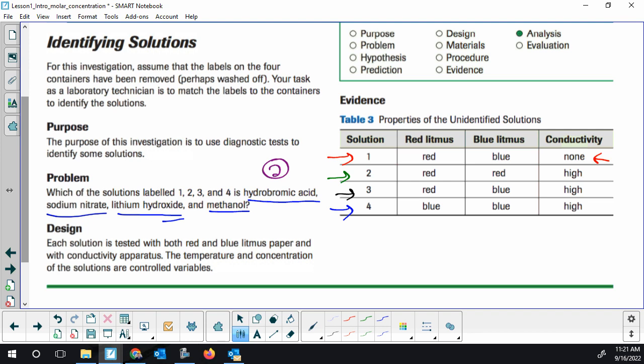So you need to find something highly conductive that the litmus doesn't change. Four has a change, so that doesn't work. Two we used already. Three, red stayed red. Blue stayed blue. It is highly conductive. So it'll match. Hopefully you're two out of two so far.